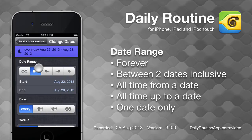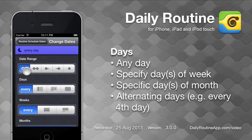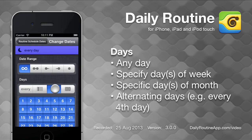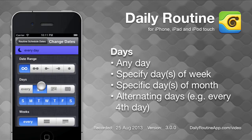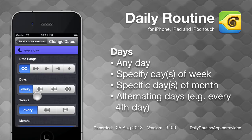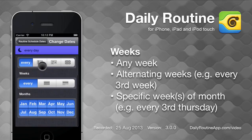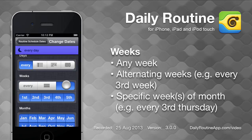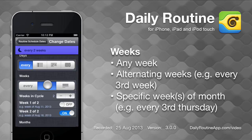Or no date limit at all. For the days option, we can specify alternating days, specific days of month, specific days of week, or all days. For the weeks option, we can specify particular weeks of the month, alternating weeks, or all weeks.